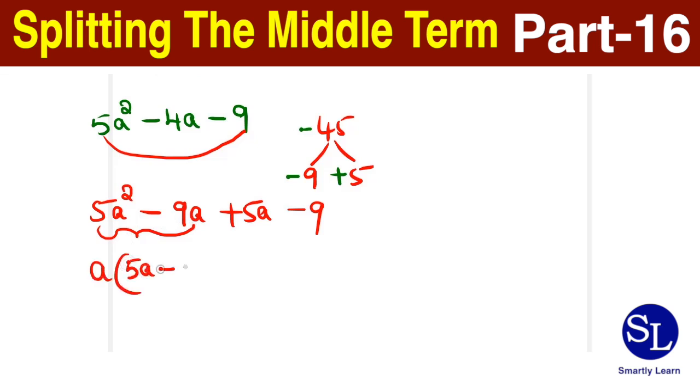Between the last two terms, I have nothing in common, so I take that as 1. So this also gives a 5a minus 9. So now this 5a minus 9 is common, so let me take that out, which is 5a minus 9 into a plus 1.